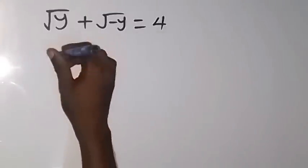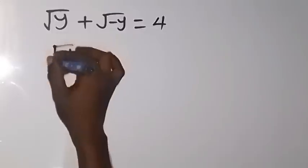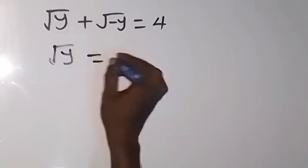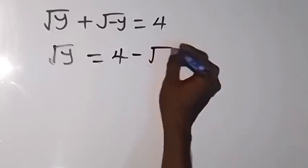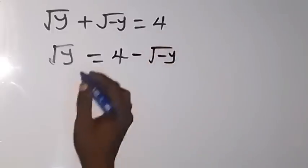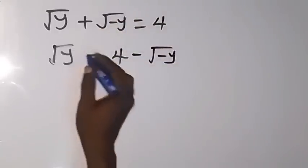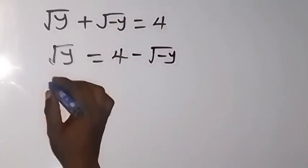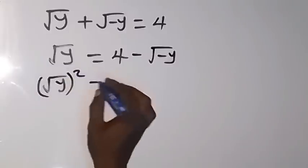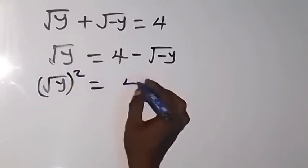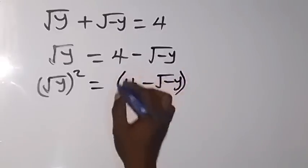We have root y equals to four minus root minus y. So we have separated this term, and it becomes minus. Let's square both sides: we have root y squared equals to four minus root minus y, all squared.